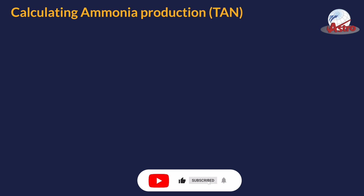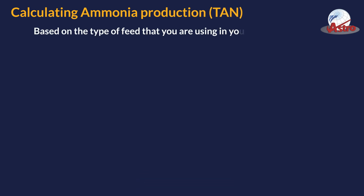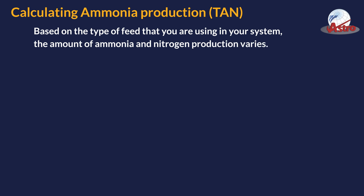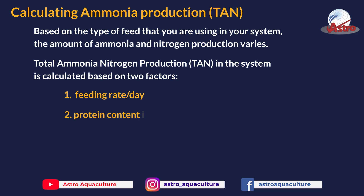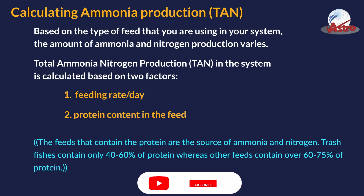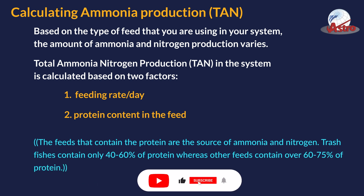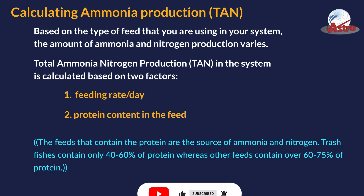Calculating Ammonia Production. Based on the type of feed used in your system, the amount of ammonia and nitrogen production varies. Total ammonia nitrogen (TAN) production is calculated based on two factors: feeding rate per day and protein content in the feed. Feeds that contain protein are the source of ammonia and nitrogen. Trash fish contain only 40–60% protein, whereas other feeds contain over 60–75% protein.